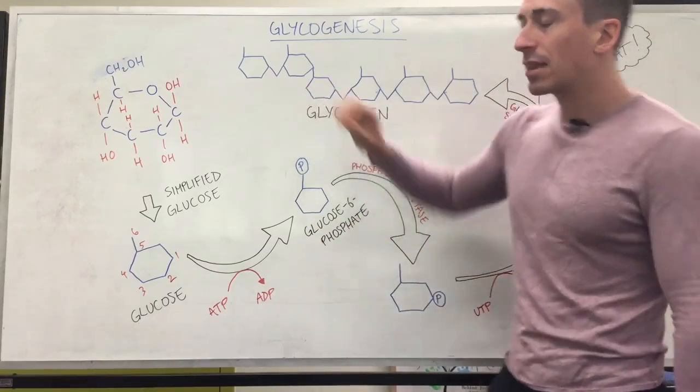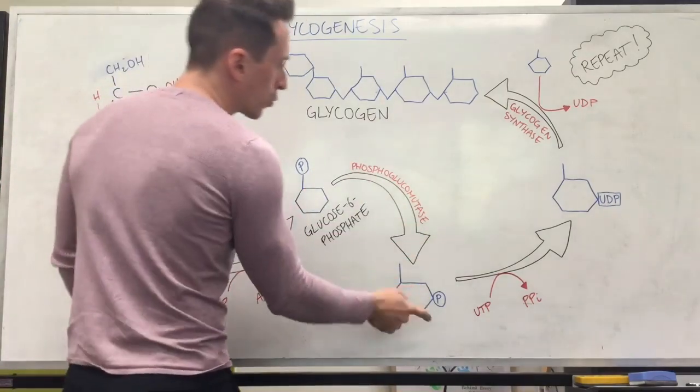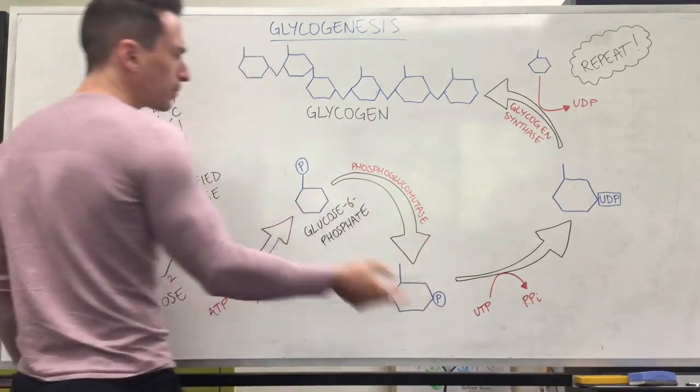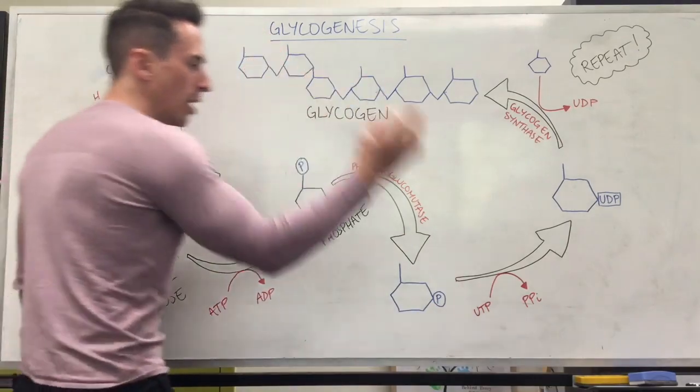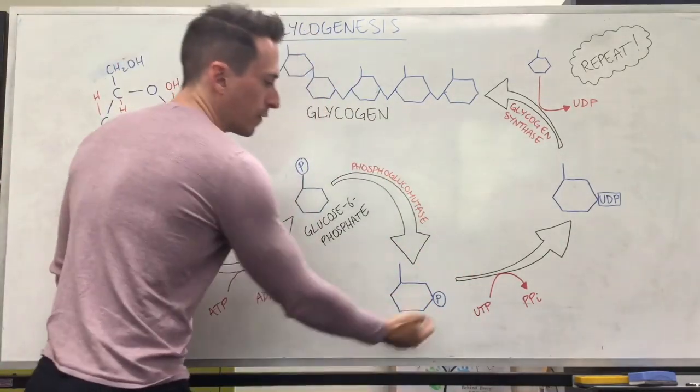Now what we need to do is take that phosphate and put it in another position. We do this with another enzyme called phosphoglucomutase, take it off the sixth position, put it on the first position. So there's the first position. Now we've got the phosphate there.